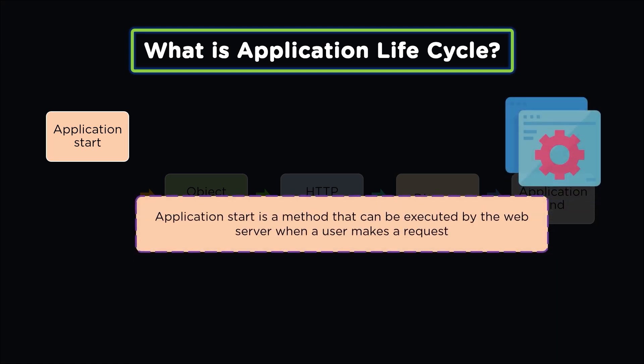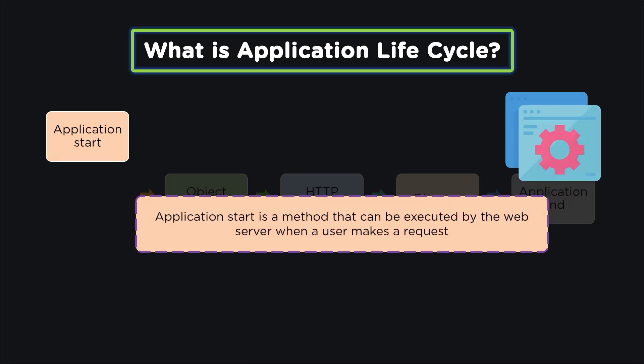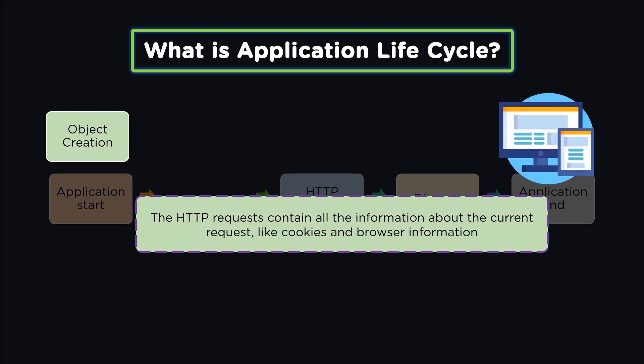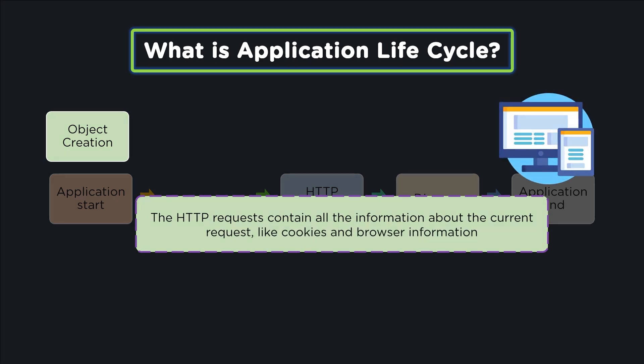The first step is application start. Whenever a user requests an application for accessing a web server, the request is first checked and then access is provided. The second stage is object creation, which holds all the information about the request, cookies, and browsing information. It also holds HTTP context, HTTP request, and HTTP response by the browser.